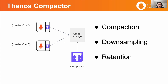Each iteration, the compactor will perform three tasks in order, which means if there is too much compaction work to finish, then it can't start downsampling and retention. So usually the backlog happens in phase one, which is the compaction phase.